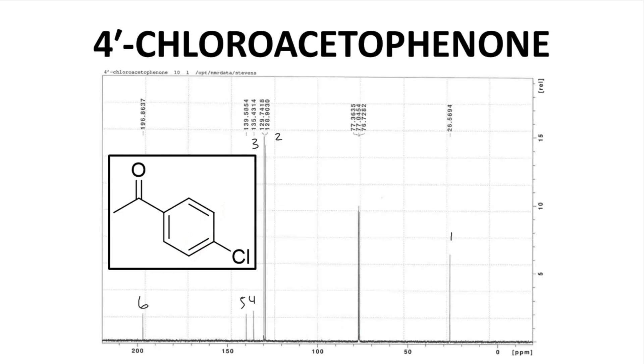We have one sp3 hybridized carbon, the methyl, and that appears far upfield between 20 and 30 ppm. Three of the carbons are quaternary – one, two, three – and those quaternary carbons give these three smaller peaks.